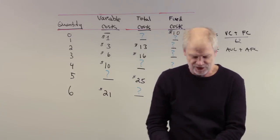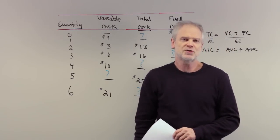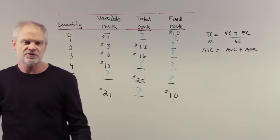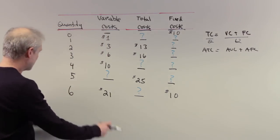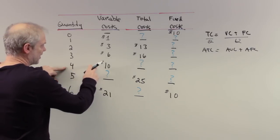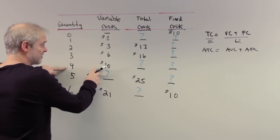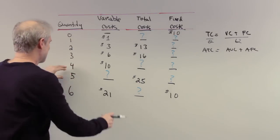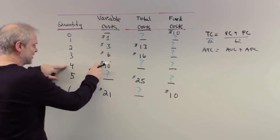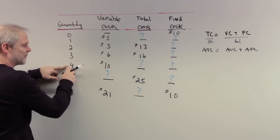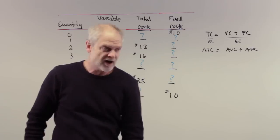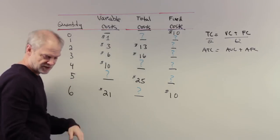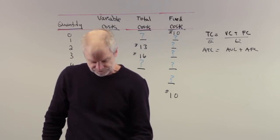Next one: the average variable cost of producing four posters. We have an output of four posters, we go to variable cost right here at $10. We take the $10 in total variable cost divided by the four units of output, and that gives us an average variable cost of $2.50. The answer to the second one is B.